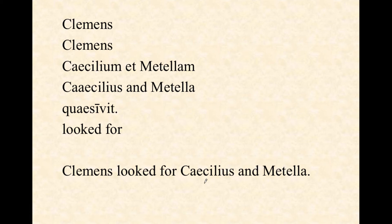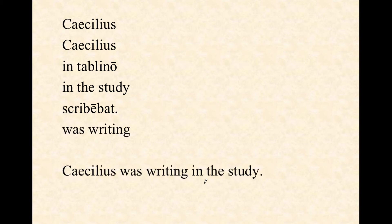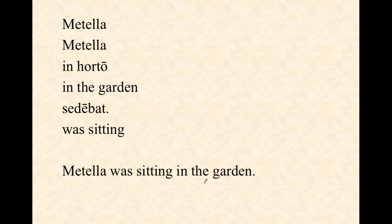Clemens looked for Caecilius and Metella. Caecilius in tablino scribebat — imperfect tense, was writing. Caecilius was writing in the study. Metella in horto sedebat — Metella was sitting in the garden. Another imperfect tense verb with the -bat ending: was sitting.